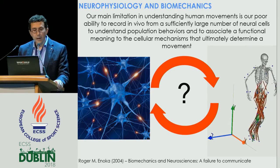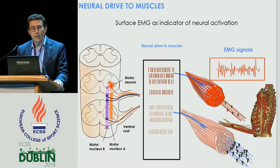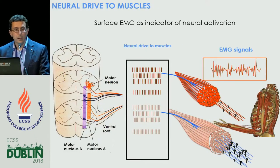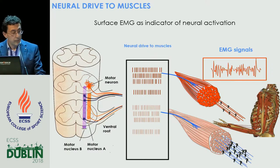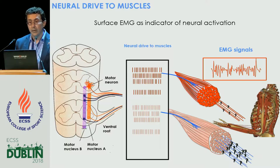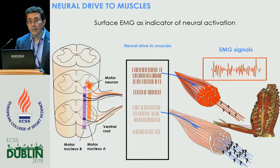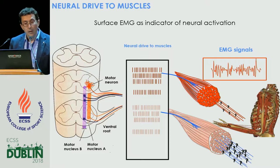Classically, this gap has been filled — or people have tried to fill it — by using electromyography. Electromyography provides an indication of neural activity since the electrical activity of muscle fibers is related to the neural drive that the fibers receive, which is the activity of the motor neurons. Therefore, the amplitude or intensity of the surface electromyography signal has often been used as an indication of neural activation. However, this approach has a number of limitations, and I will show you one example to illustrate them.